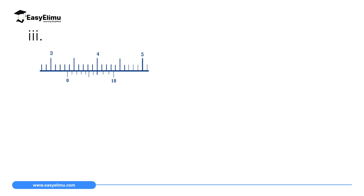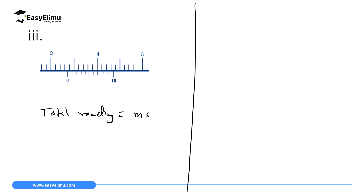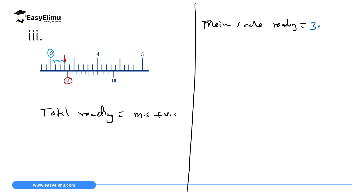For the third question, total reading equals main scale reading plus Vernier scale reading. We determine the main scale reading by going to the zero mark of the Vernier scale, then up to the main scale, reading the value opposite and to the left. Here we have 3, 3.1, 3.2, 3.3 — so the main scale reading is 3.3 centimeters.